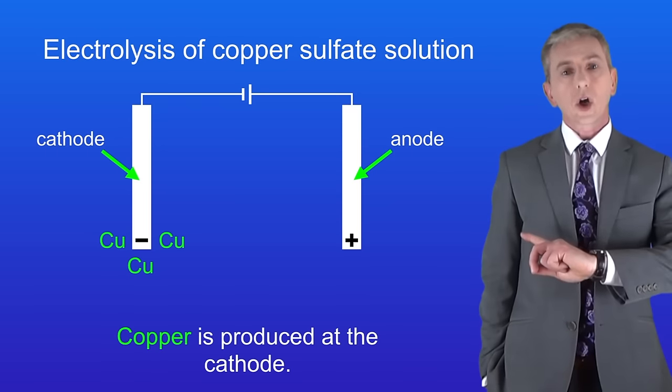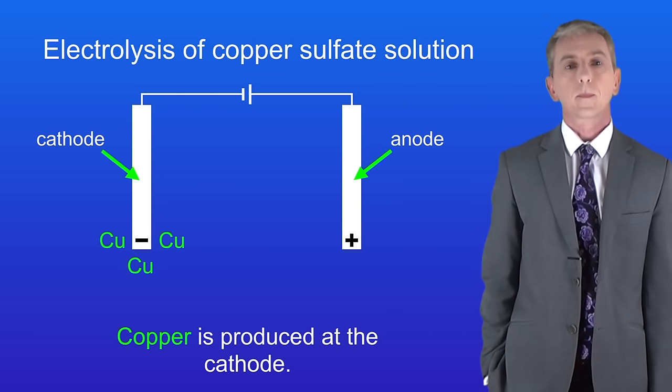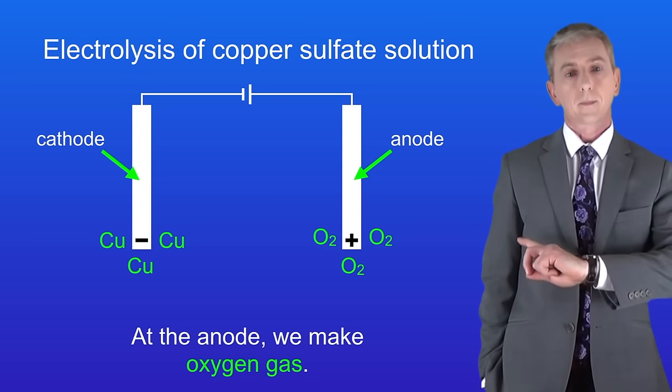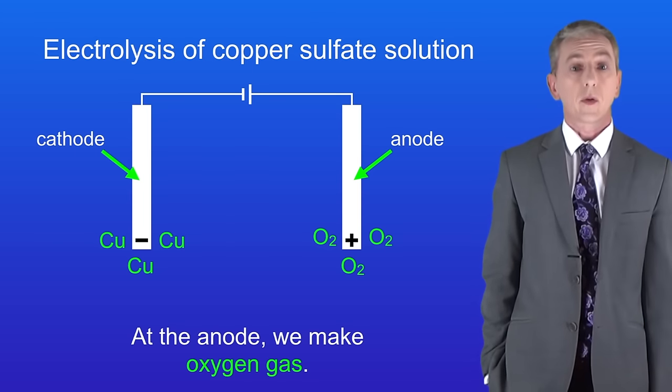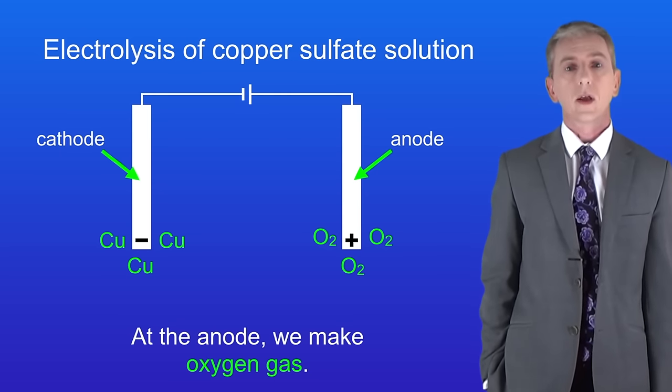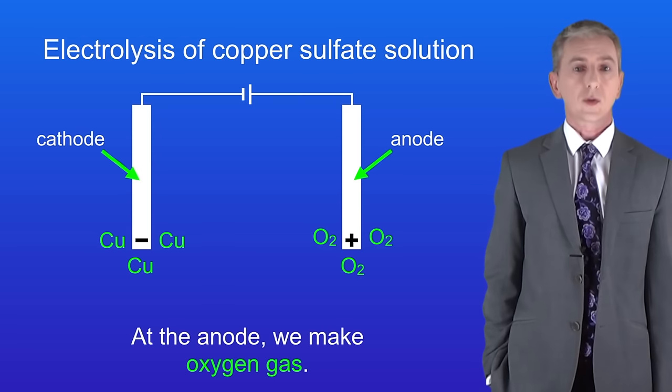So here's the copper being produced at the cathode. At the anode we make oxygen gas. Now I should point out that if we're carrying out electrolysis on an aqueous solution then we usually get oxygen produced at the anode. There is an exception to that rule which we'll see in the next video.